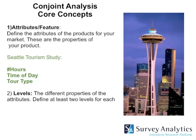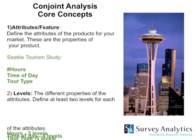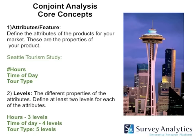The second concept is levels — different properties of the attributes. For each feature and attribute, you want at least two levels. In our Seattle example, for hours we have three levels: one to three hours, two to four, and four to six. Time of day we have morning, noon, and evening. Tour types include a scenic tour, a weird tour, a wine tour, a coffee tour, et cetera.